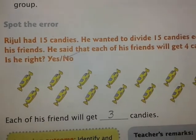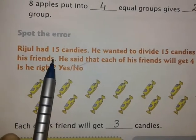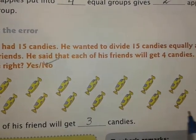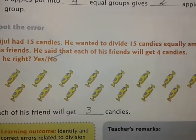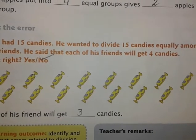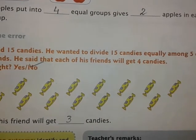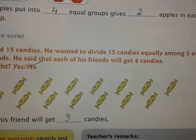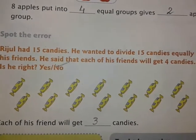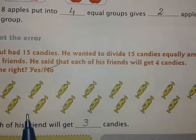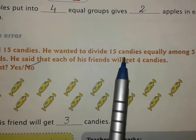Next comes the most interesting part — 'Spot the Error,' which all of you enjoy! See this boy: Rijul had fifteen candies. He wanted to divide fifteen candies equally among five of his friends. He said that each of his friends will get four candies. Do you think he is right? No, we know that he is wrong because he has done wrong division. Fifteen divided by five will not be four.